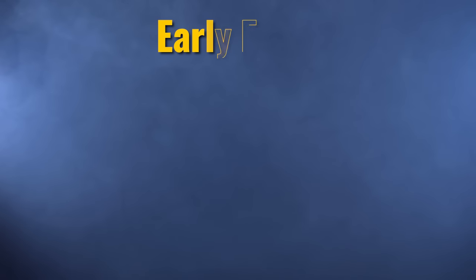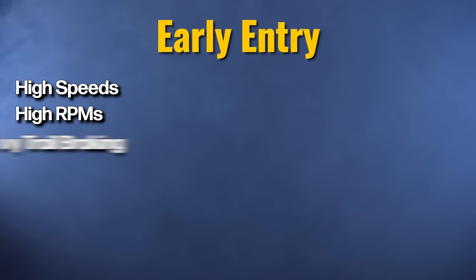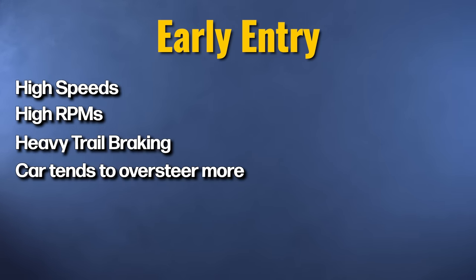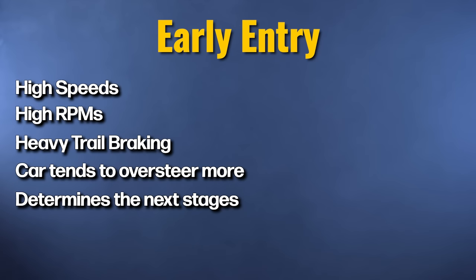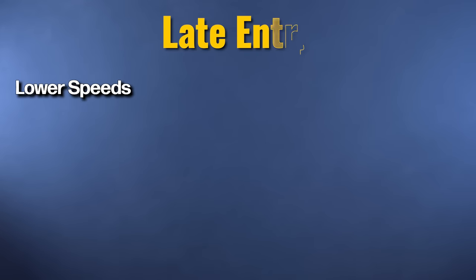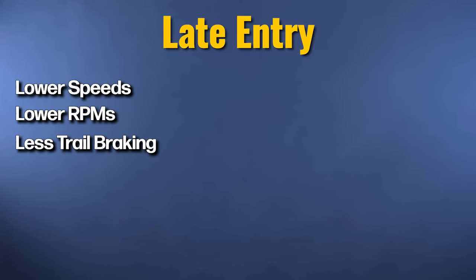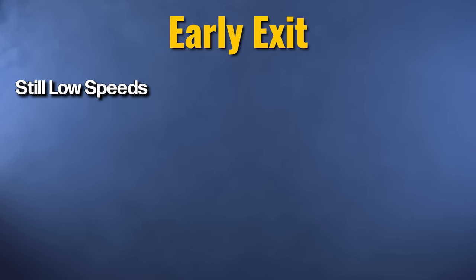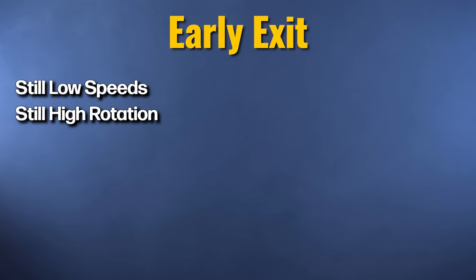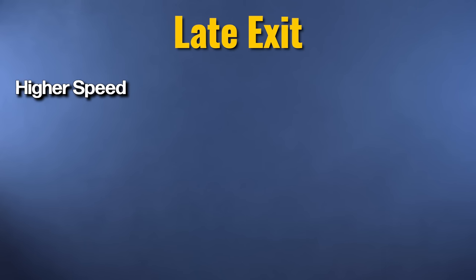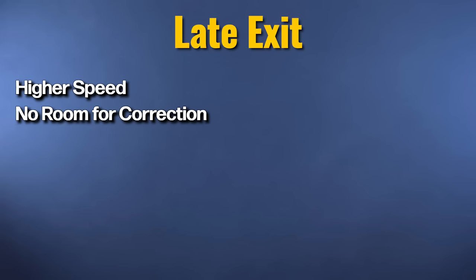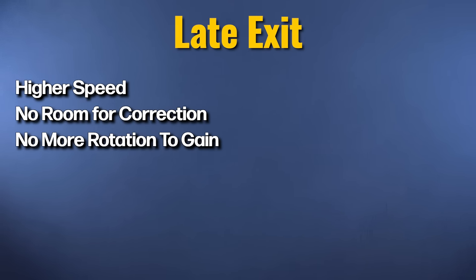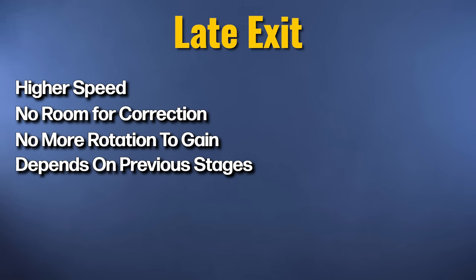Let's do a quick recap of the biggest characteristics of each stage. On early entry: speeds are higher, RPMs are high, still a lot of heavy trail braking — the car tends to oversteer a little bit more, and it determines everything from the next stages. Late entry: speeds are lower, RPMs are lower, much less trail braking, so the car tends to understeer a little bit more. On early exit: you start accelerating, speeds are still low, so you should still get a decent amount of rotation but not gain rotation — it's safer to push for rotation here than at late exit. Late exit: speeds are high, you don't have a lot of room for corrections, the car does not accept gaining rotation at all, and there's a big danger of going off if the previous phases were bad.